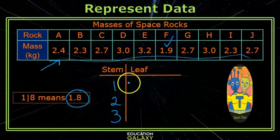There's only one 1, so I put a 9 here for 1.9. I have multiple 2s, and I need to list them from least to greatest. So I scan my data and see that I have two 2.3s.